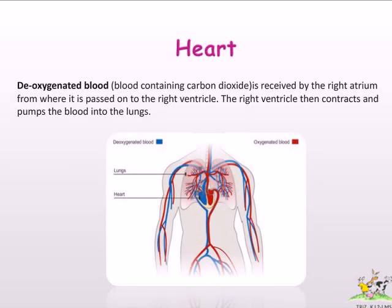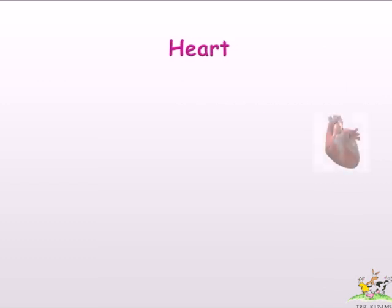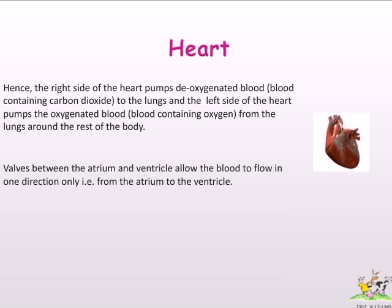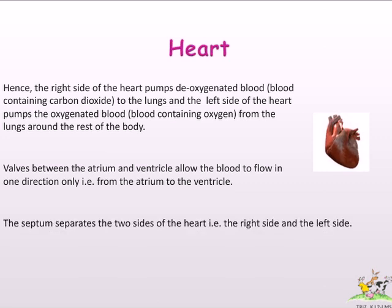Deoxygenated blood, or blood containing carbon dioxide, is received by the right atrium, from where it is passed on to the right ventricle. The right ventricle then contracts and pumps the blood into the lungs. The right side of the heart pumps deoxygenated blood to the lungs, and the left side pumps oxygenated blood from the lungs around the rest of the body. Valves between the atrium and ventricle allow blood to flow in one direction only — from the atrium to the ventricle. The septum separates the right and left sides of the heart.